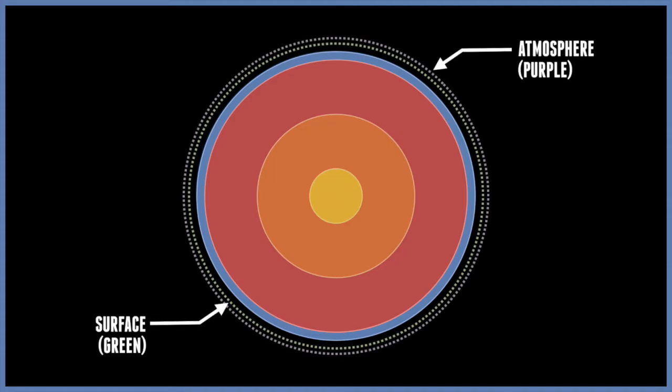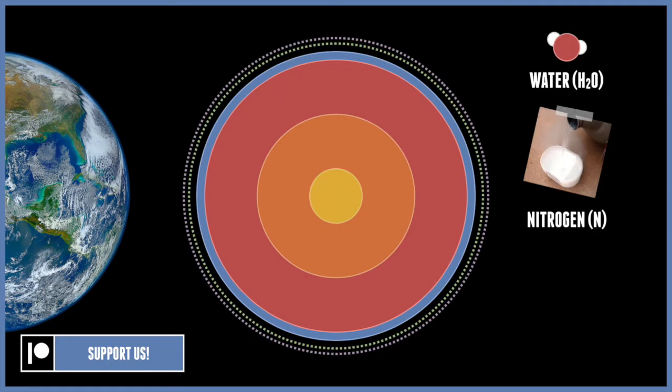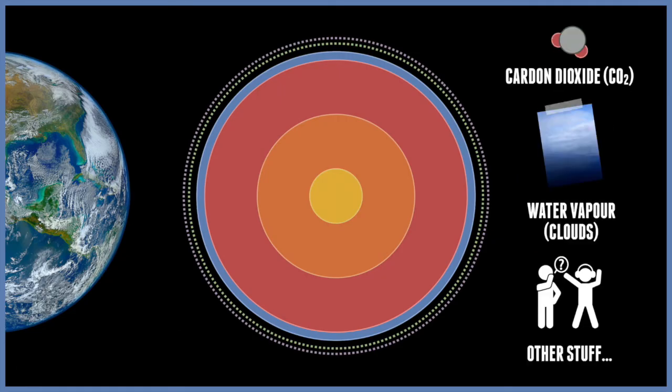The Earth's surface is mainly covered with liquid water, and its atmosphere is mainly nitrogen and oxygen, with smaller amounts of carbon dioxide, water vapor, and other gases.